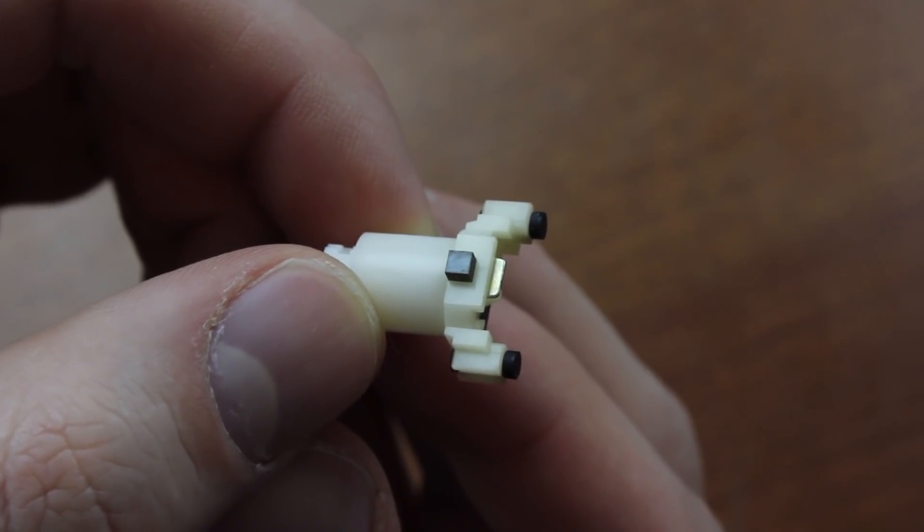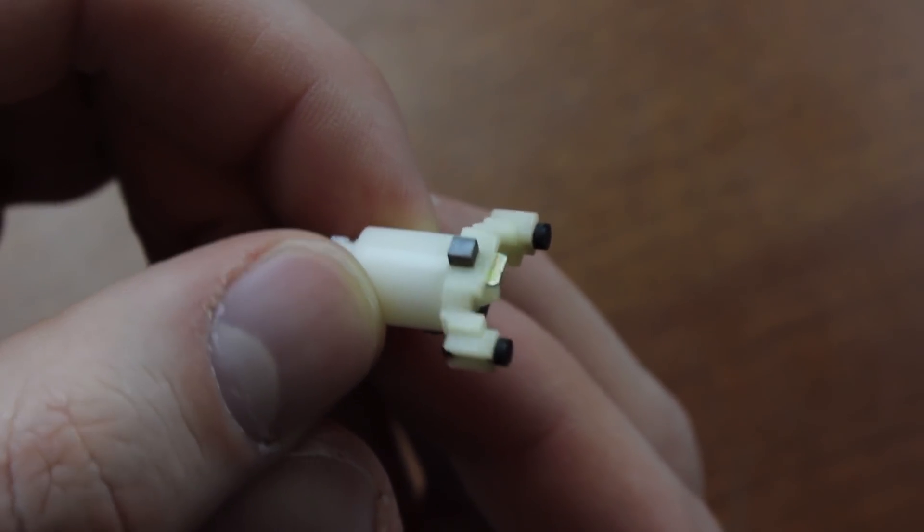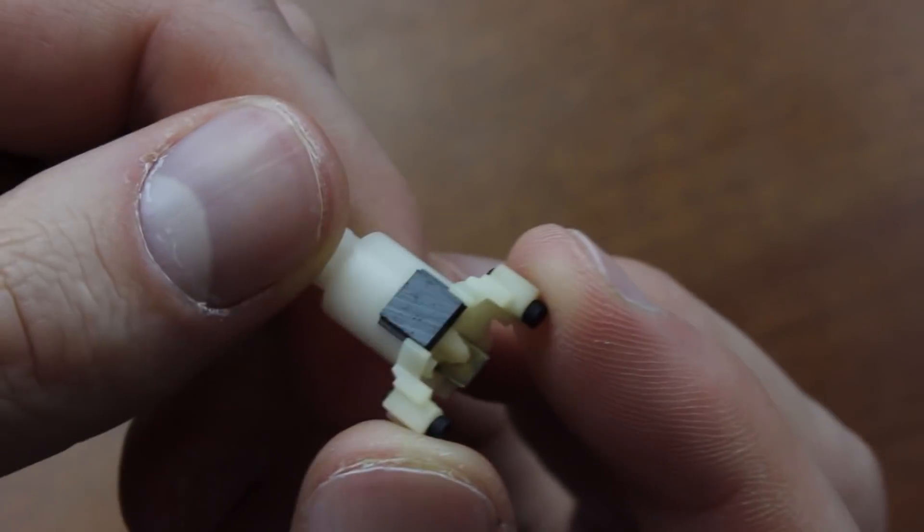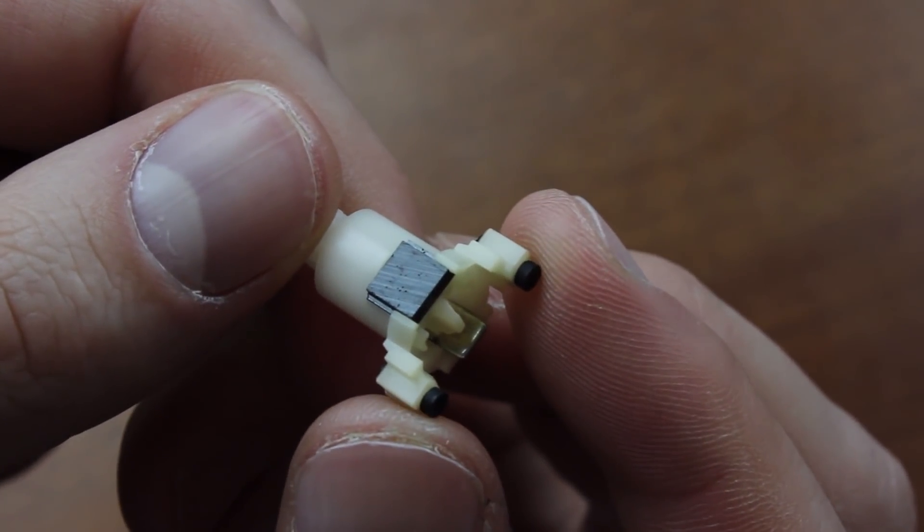So you've got one magnet in the slider, and then the clicker consists of two more magnets located on the opposite side of the switch from the hall sensor.